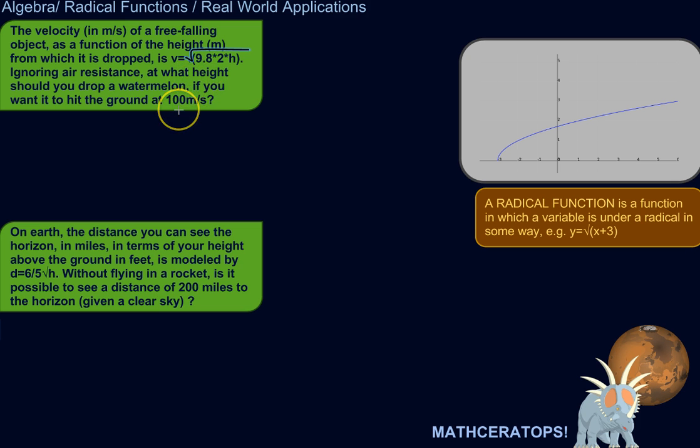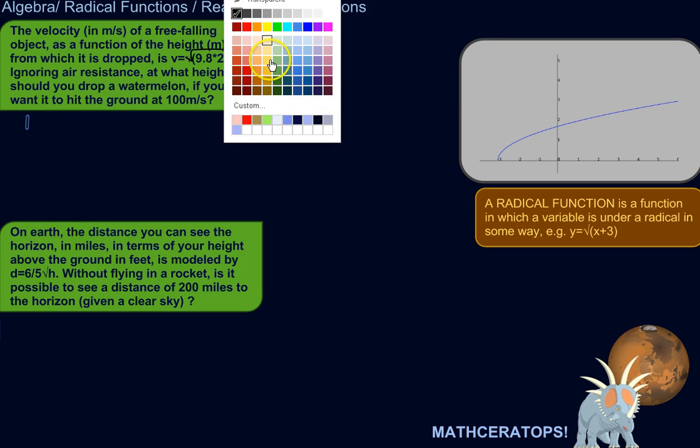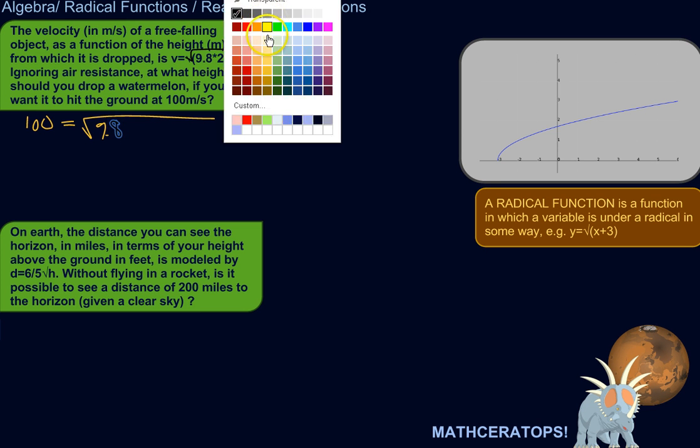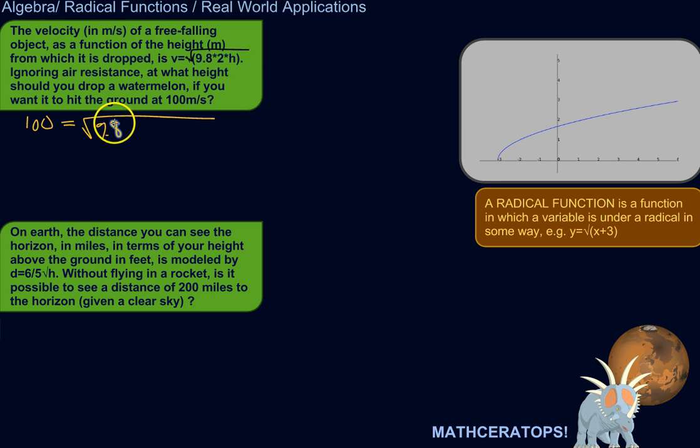Alright, good problem. So, 100 is the velocity we want, 100 meters per second, is equal to the square root of 9.8. And this is valid for locations more or less close to the surface of the earth. 9.8 is the acceleration due to gravity.